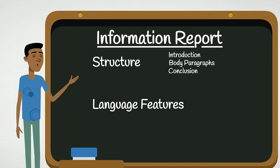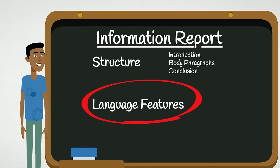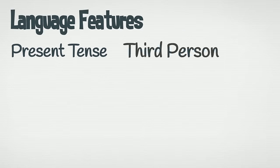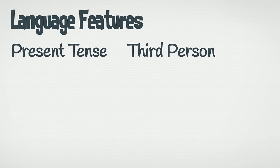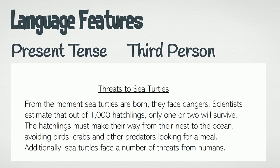Let's now take a look at the language features of an information report. Information reports should be written in present tense and in third person. Let's go back to the introduction we looked at earlier. We can see that present tense has been used here. It's also written in third person.